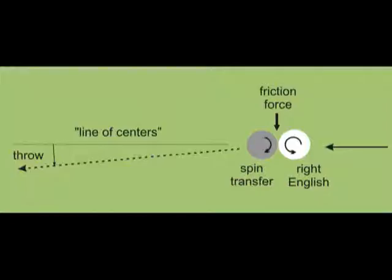Here the right English pushes the object ball slightly to the left of the line of centers. The same friction force that pushes the object ball left also induces some spin on the object ball. In this case, the right English, which is counterclockwise, induces a small amount of clockwise or left spin to the object ball.